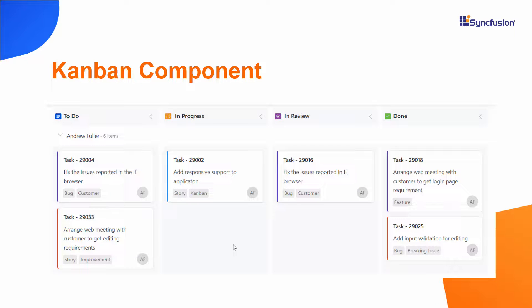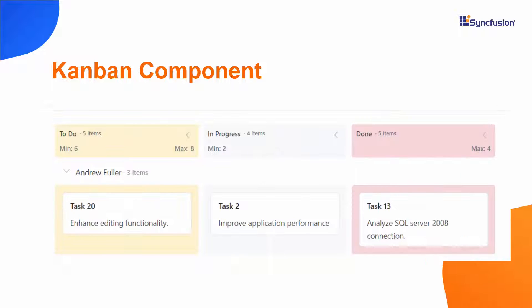Then, I will explain how to bind a data source to the Kanban, enable swim lanes in it, set a custom height and width, add tooltips and customize them, and validate specific columns.